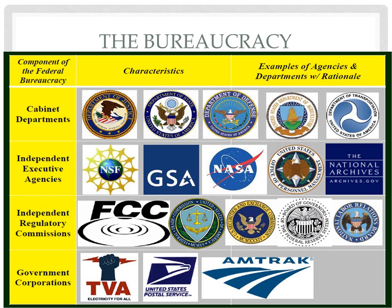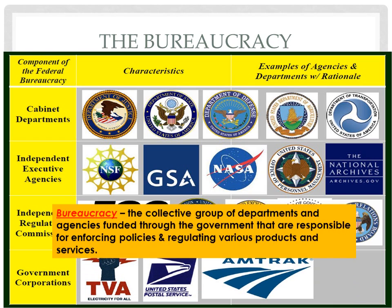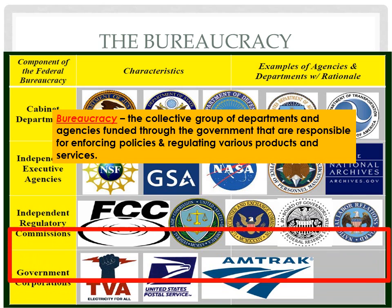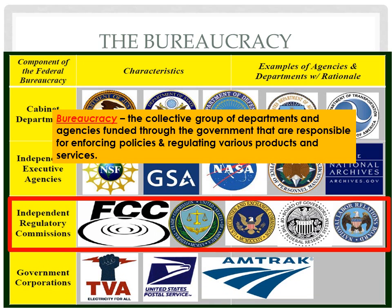All of the cabinet departments, as well as the thousands of regulatory commissions and agencies that work within them — including executive agencies and government corporations like the U.S. Postal Service — are all members of what we call the bureaucracy. The bureaucracy is the collective group of departments and agencies funded through our government with the responsibility of enforcing policies passed by Congress and regulating various products and services within our economy. The independent regulatory commissions that we see on a regular basis include the Federal Communications Commission, responsible for monitoring TV waves, cell phone waves, and radios, sometimes using censoring if they believe something is inappropriate for a certain audience.